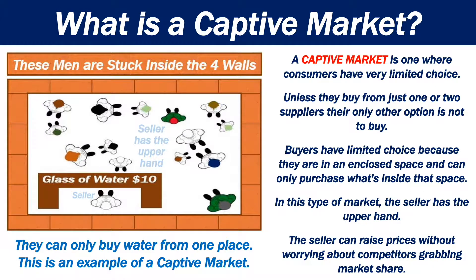A captive market is one where consumers have very limited choice. Unless they buy from just one or two suppliers, their only option is not to buy. Buyers have limited choice because they are in an enclosed space and can only purchase what's inside that space. In this type of market, the seller has the upper hand. The seller can raise prices without worrying about competitors grabbing market share.